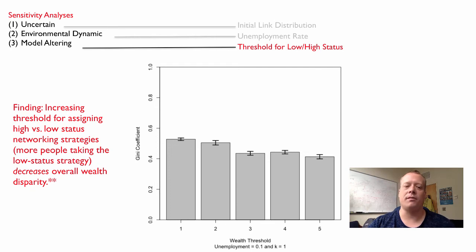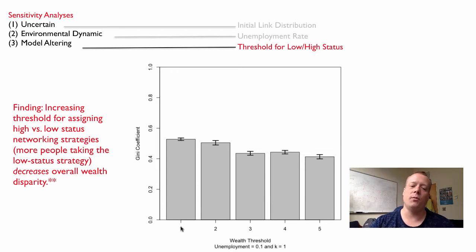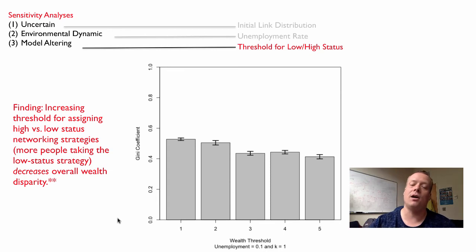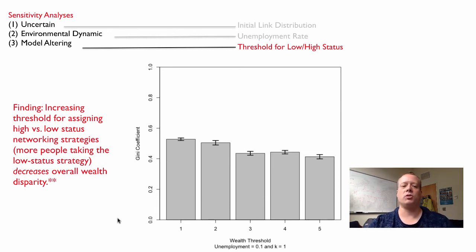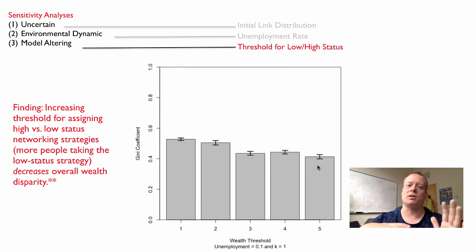One thing that might affect model results is the definition of high or low socioeconomic status. We modified the wealth alpha parameter: originally we said a high SES individual is someone one standard deviation above mean wealth, then we looked at two, three, four, and five standard deviations. What we find is that inequality in the network actually goes down the smaller the fraction of high SES individuals — which makes sense, because basically everyone is similar to each other. Unfortunately, further analysis shows what results is just a lot more poor people — the world is more similar because everyone is really poor.